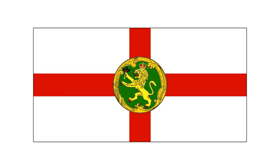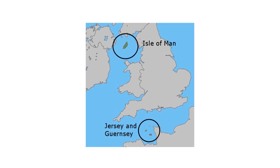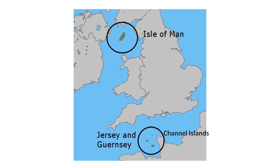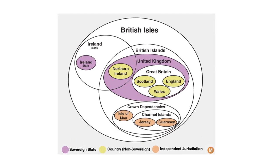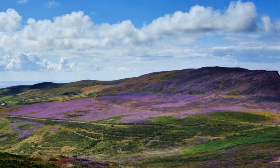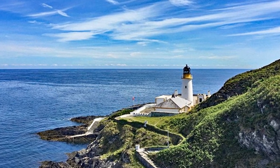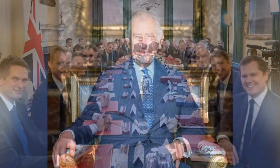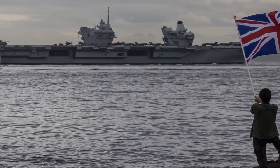Then there are the crown dependencies. These are three island territories lying within the British Isles. Jersey and Guernsey make up the Channel Islands, and the third one is Isle of Man. The crown dependencies are not part of the United Kingdom — these are self-governing possessions of the British crown. The three crown dependencies have their own varying forms of self-administration, but on behalf of the King, the United Kingdom's government takes responsibility for certain areas such as defence and foreign affairs.